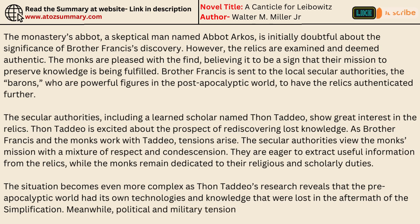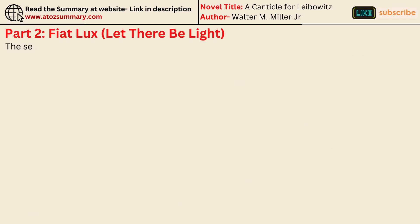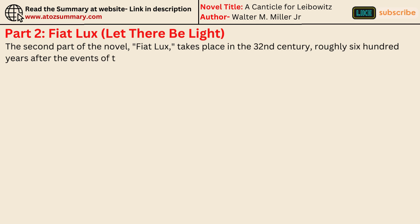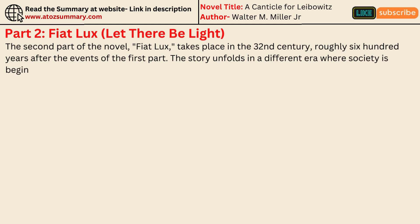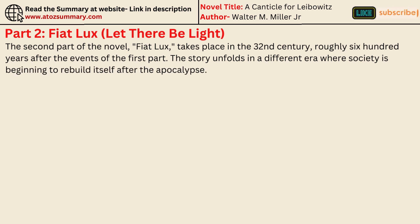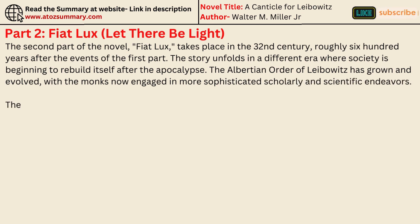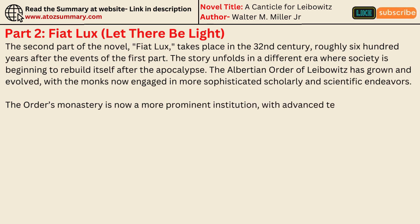Meanwhile, political and military tensions increase as a new global conflict looms. The second part of the novel, Fiat Lux, takes place in the 32nd century, roughly 600 years after the events of the first part. Society is beginning to rebuild itself after the apocalypse. The Albertian Order of Leibowitz has grown and evolved, with the monks now engaged in more sophisticated scholarly and scientific endeavors. The Order's monastery is now a more prominent institution, with advanced technology and resources.